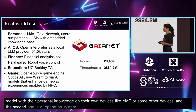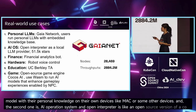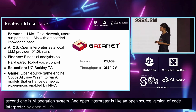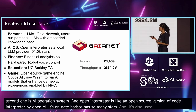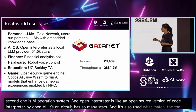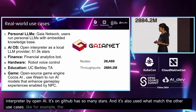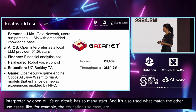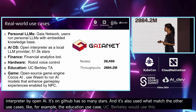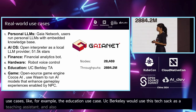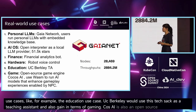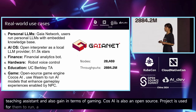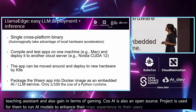Open Interpreter is like an open-source version of Code Interpreter by OpenAI — it has so many stars on GitHub and also uses Wasm edge. Another use case is education: UC Berkeley uses this tech stack as a teaching assistant. In gaming, ClosedAI is also an open-source project that uses Wasm to run AI models to enhance their NPC interactions with users.